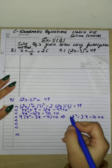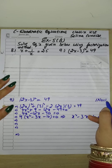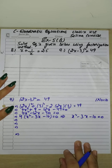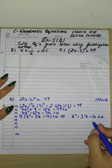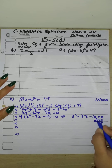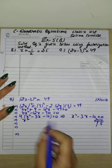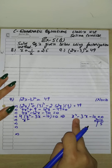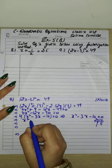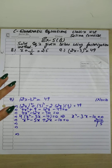To split the middle term, we multiply the coefficient of x² (which is 1) by the constant (which is 10), giving us 10. We need two numbers whose product is 10 and whose difference is 3. That is 5 and 2, since 5 − 2 = 3. Because we need a negative middle term, we write: x² − 5x + 2x − 10 = 0.